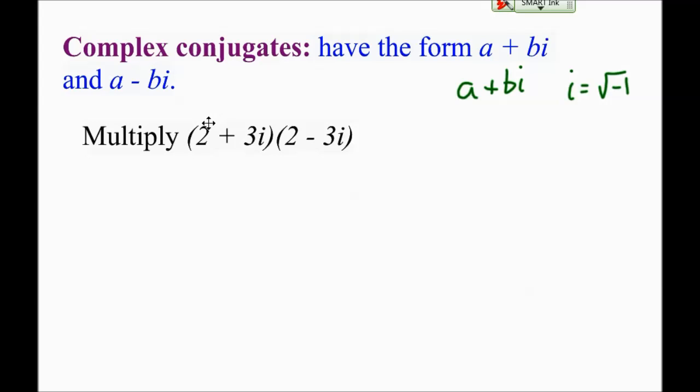And if you forget how to multiply, you can go watch my video where I give more detail on how to do it. I'm going to kind of briefly glance through this. So, first thing, we're going to multiply. FOIL it. First. Outside, that's minus 6i. Inside, plus 6i. And last, minus 9i squared.